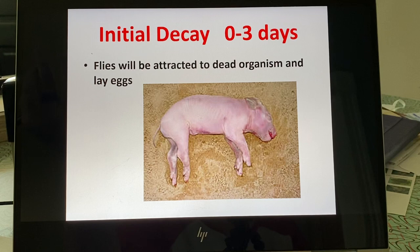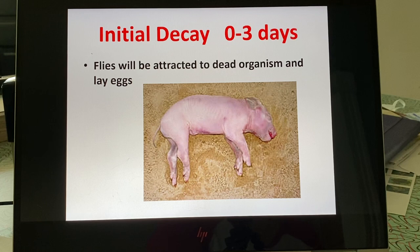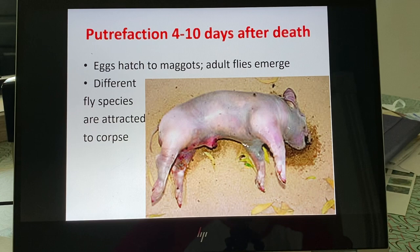Flies won't land on intact skin because it's too dry. They're attracted to moist areas because once they lay their eggs, those eggs are fragile and can dry out quickly — a process called desiccation. If the eggs dry out, there's no chance of them hatching, so the fly lays eggs where there's moisture to give her potential offspring the best chance. Next we're heading into full-blown decomp, or putrefaction, where the eggs laid by flies begin to hatch into maggots.